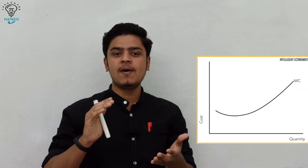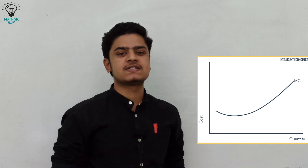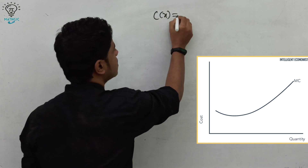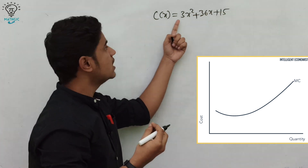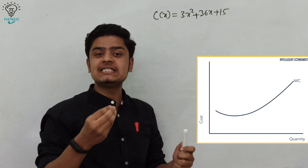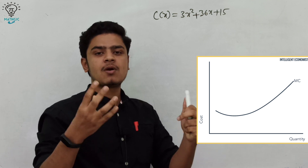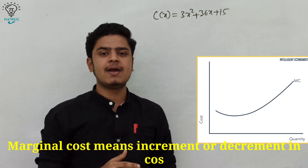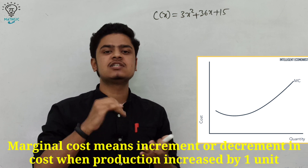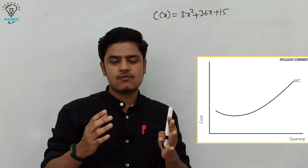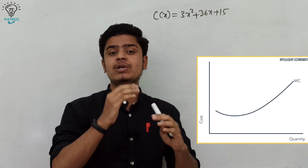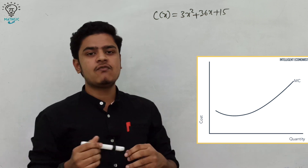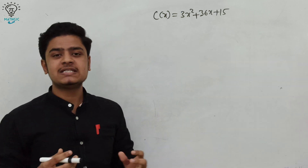Let's look at another example in economics. Suppose a company produces x units of a product and the total cost c(x) is given by the function c(x) = 3x² + 36x + 15, where x is the number of units and c(x) is the cost price. We have to find the marginal cost when the company produces 10 units. Marginal cost means the increment or decrement in cost when the company's production increases by 1 unit — mathematically, it is the change of cost price with respect to quantity.